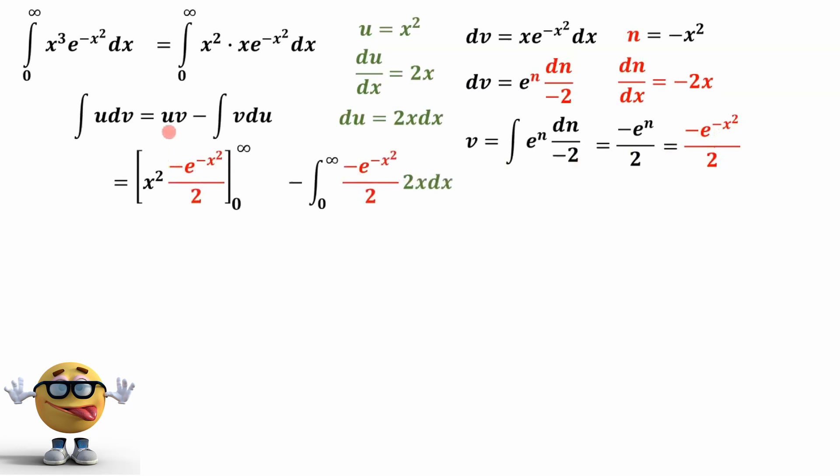So we're going to plug all this stuff in to our integration by parts, where u is our x squared. v is what we just solved for right here, what we evaluated. We're going to go from 0 to infinity on both limits, minus, and now this is our v that we solved for, and then the du is this part that we plugged in here.